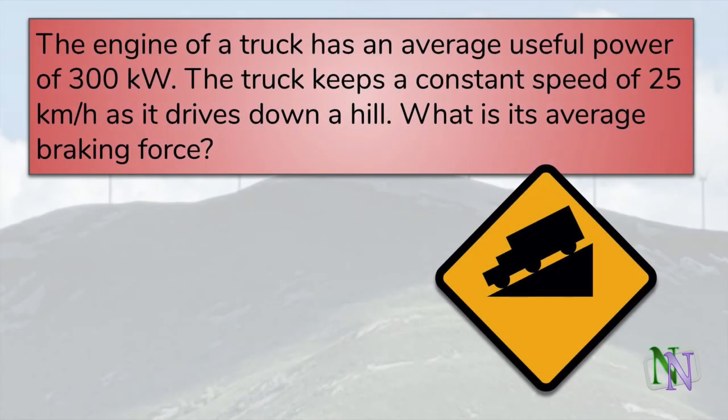This question applies the formula P equals FV. As ever, we must be careful with the units and the rounding. There are kilowatts and kilometers per hour here. The engine of the truck has an average useful power of 300 kilowatts. The truck keeps a constant speed of 25 kilometers an hour as it drives down a hill. What is the average braking force?